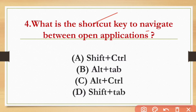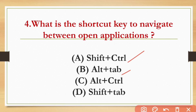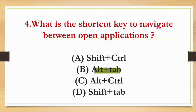What is the shortcut to navigate between open applications? The options are Shift+Ctrl, Alt+Tab, Alt+Ctrl, and Shift+Tab. The shortcut to navigate between open applications is Alt+Tab.